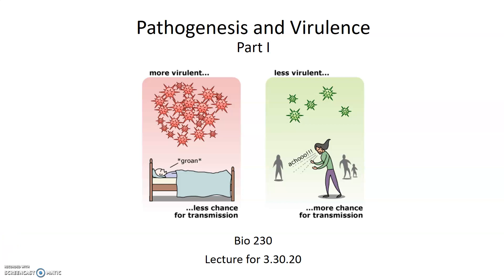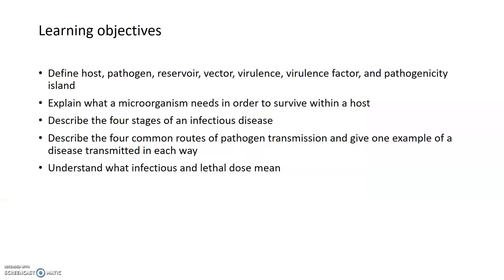This is the first half of a lecture on pathogenesis and virulence given on March 30th, 2020. The focus of this lecture is to define terminology used in infectious diseases, explain what microorganisms need in order to survive within the host, discuss the four stages of how an infectious disease progresses, common routes pathogens can take to be transmitted, and understand what the terms infectious and lethal dose mean.